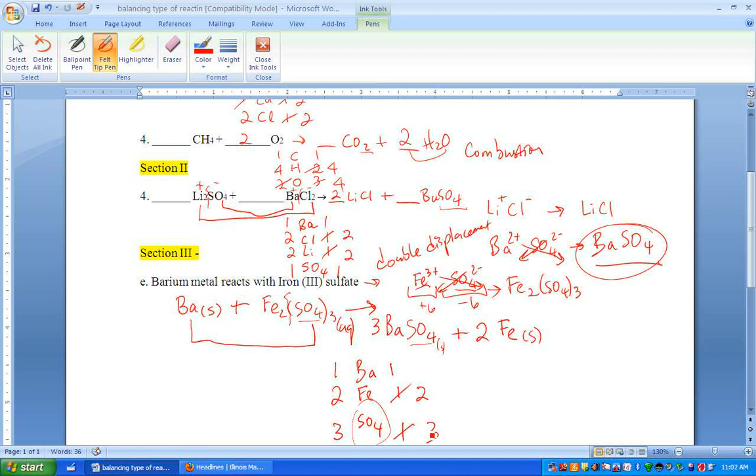We can put two here. That takes care of the iron. Let's go ahead and take care of the sulfate. We have to put three here. So that changes sulfate to three, and actually that also changes barium to three. Now we have to change the barium on the left side and you are done with this balancing equation. And again, this is a single displacement.